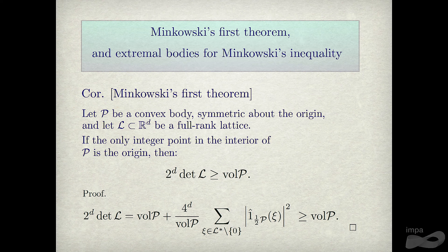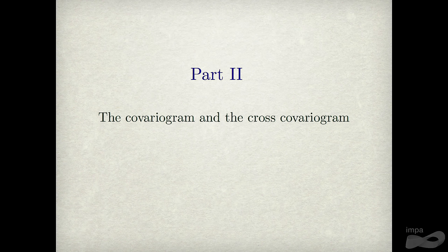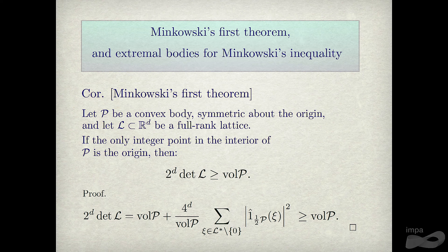The proof follows in one line, but it lay dormant for many years because in general we don't know how to compute these Fourier transforms for an arbitrary convex body. However, for polytopes we now have machinery — developed over the last 20 years — to compute them very nicely.